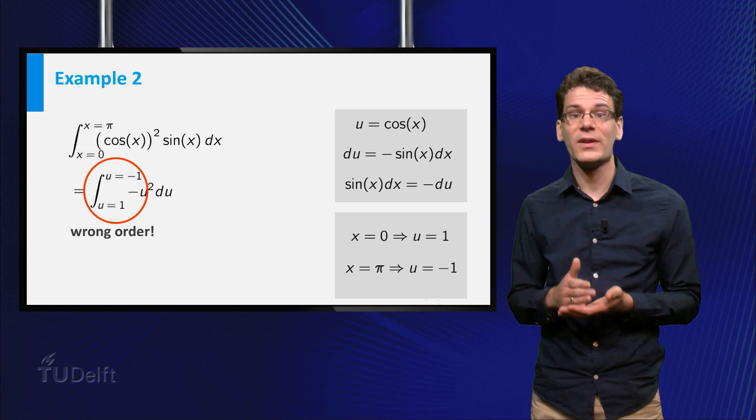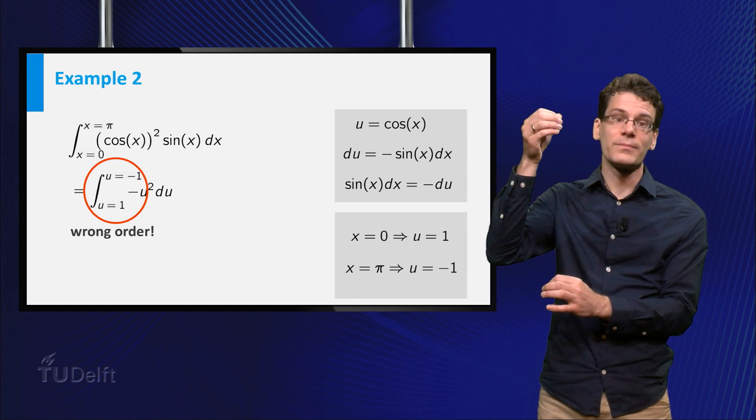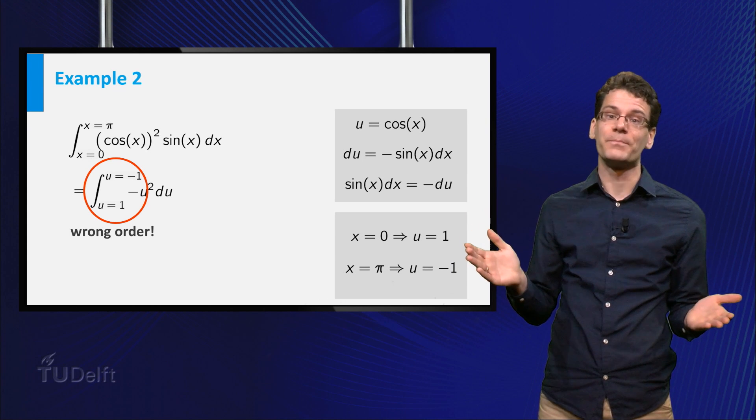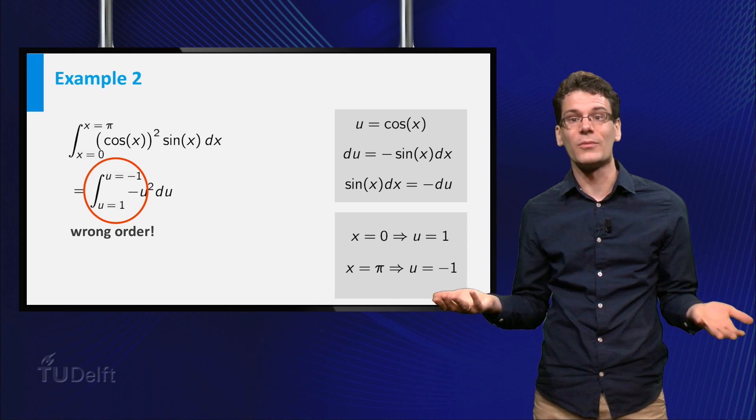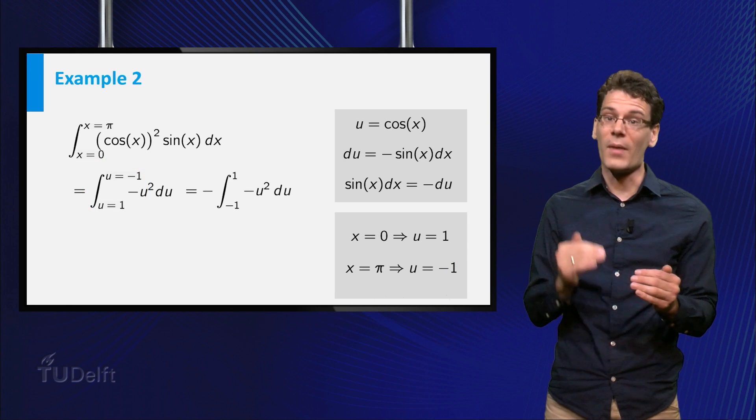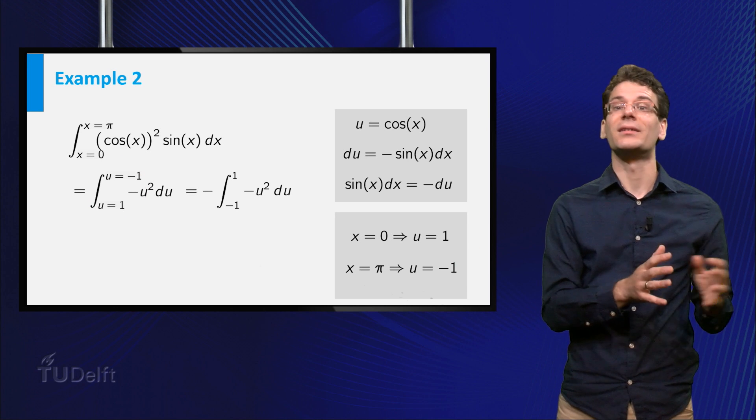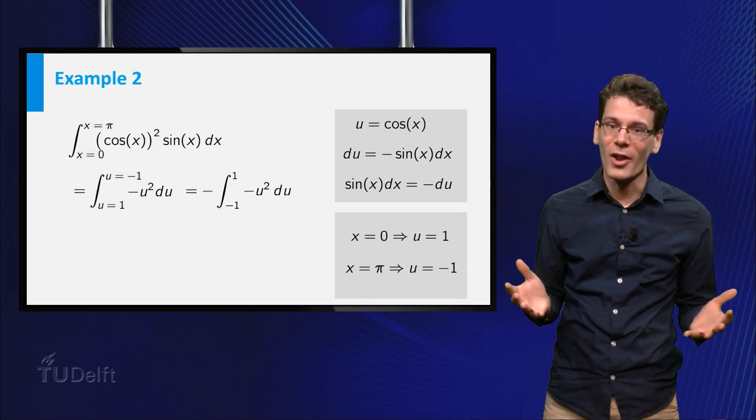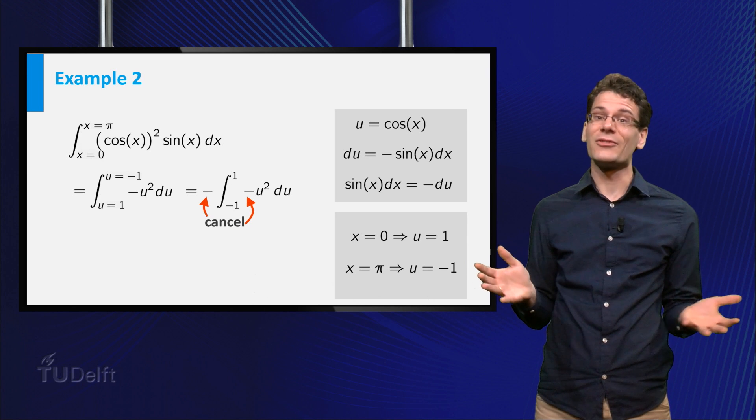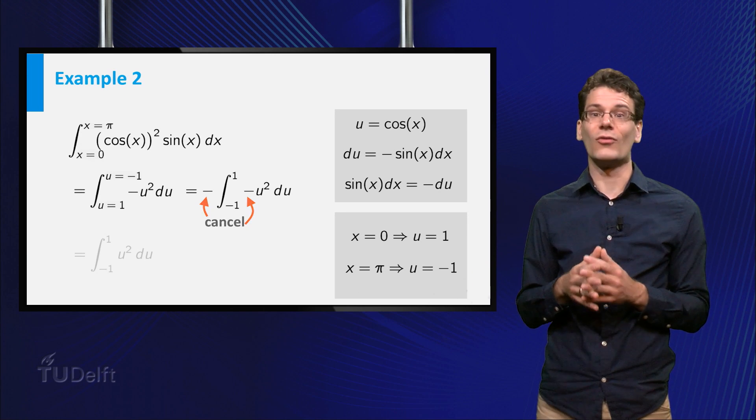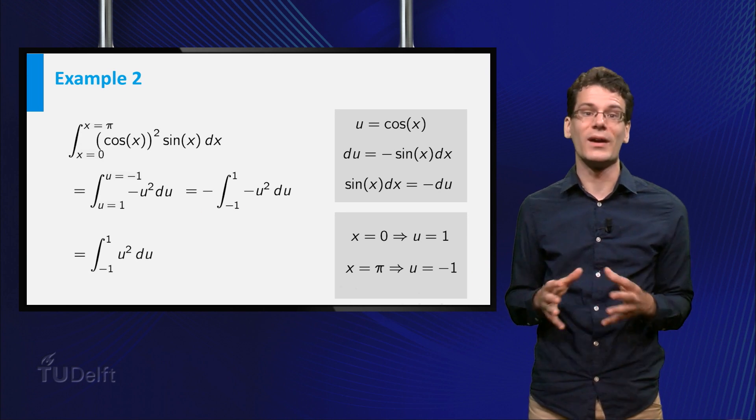As we have seen in previous videos, we can swap the boundaries, but we have to add a minus sign. Thus, the integral becomes minus the integral of minus 1 to 1 of the function minus u squared du. That are a lot of minus signs. However, two minus signs cancel and we get the integral of minus 1 to 1 of u squared du.